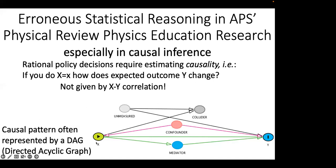An example DAG would look like this. X is the thing you might be able to change; Y is the outcome you'd like to change. There may be a direct causal effect of X on Y represented by an arrow — if you change X, Y will change. Some causation may flow through another variable called the mediator; if you can grab hold of the mediator, you can interrupt that causal effect. Some correlations between X and Y may result from another variable serving as a cause of both — a confounder — and you would want to control for that confounder.